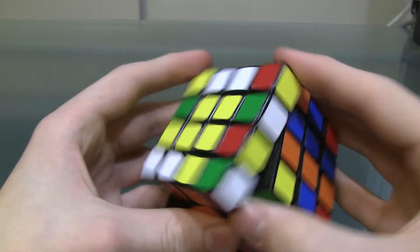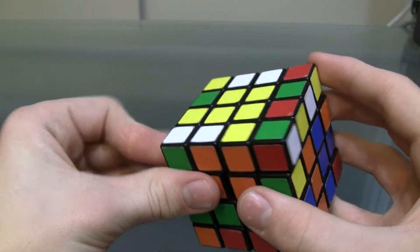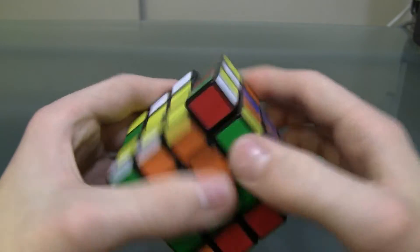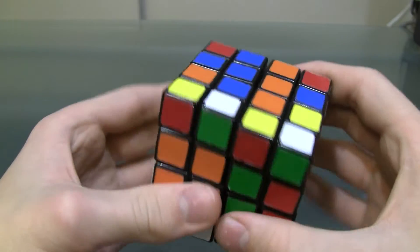So, bring an unmatched pair into its place. Just like this. Like that. Bring it down. And then, re-solve the centers.